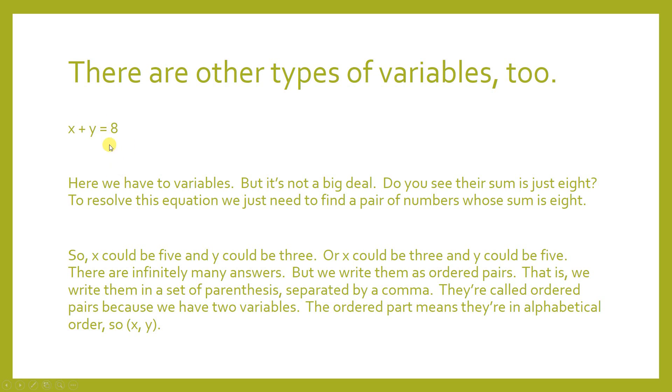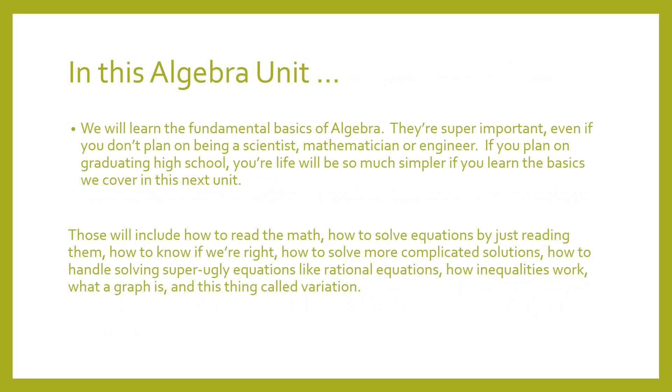And you see, x is what we call independent and y is what we call dependent. And since there's so many answers, we actually write them in what's called an ordered pair. Ordered because they go alphabetically and x comes before y in the alphabet and pair because there's two. So, we just write parentheses with a comma in the middle separating the two numbers. Now, again, this isn't such a huge deal for right now. I just want to introduce something that is going to come up in the very near future.